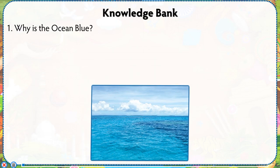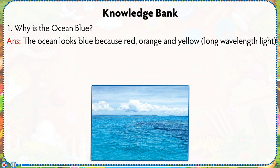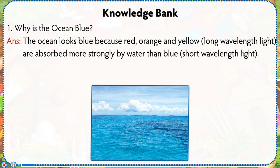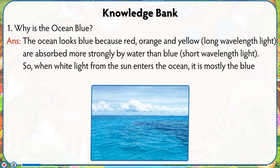Knowledge Bank. Number 1: Why is the ocean blue? Answer: The ocean looks blue because red, orange and yellow long-wavelength light are absorbed more strongly by water than blue short-wavelength light. So when white light from the sun enters the ocean, it is mostly the blue that gets returned.